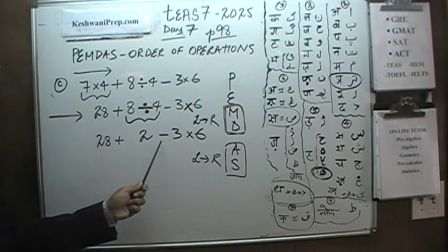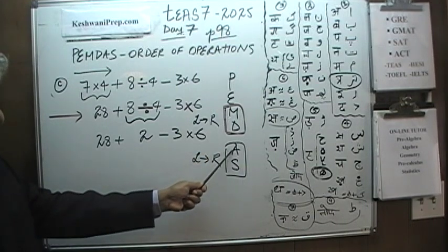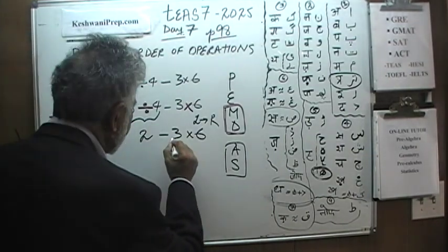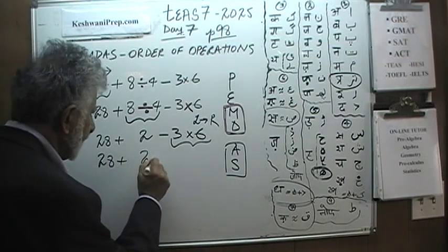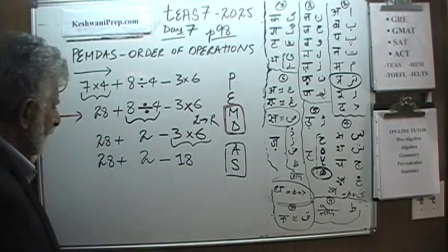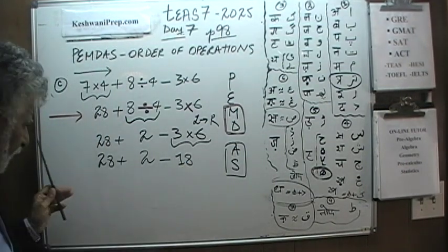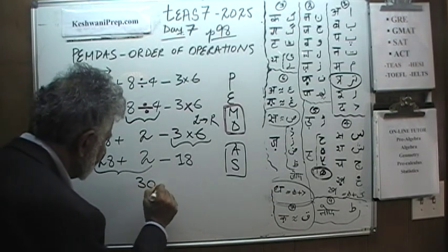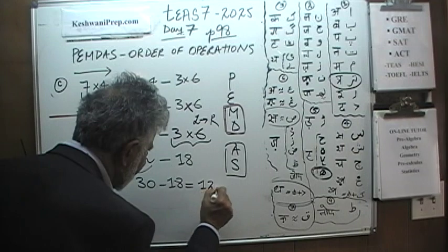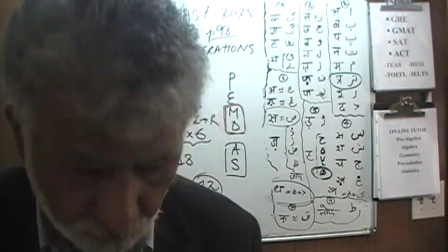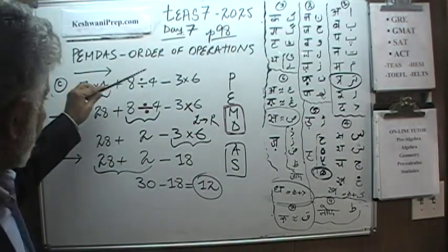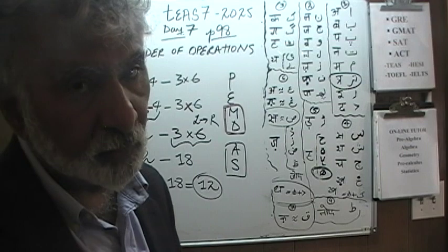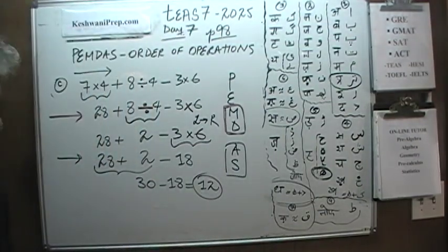Now we have addition, subtraction, and multiplication. Multiplication is done first before we worry about addition and subtraction. 3 times 6 is 18. Now we do the addition and subtraction moving from left to right. Addition appears first: 28 plus 2 is 30. So it's 30 minus 18, and the final answer is 12. If you go in order, don't jump around, rewrite everything, and line it up properly — you'll be fine. It's better to be accurate than to have speed with no accuracy.